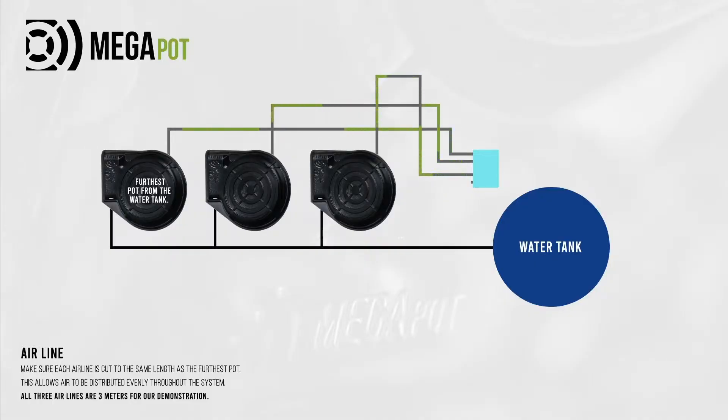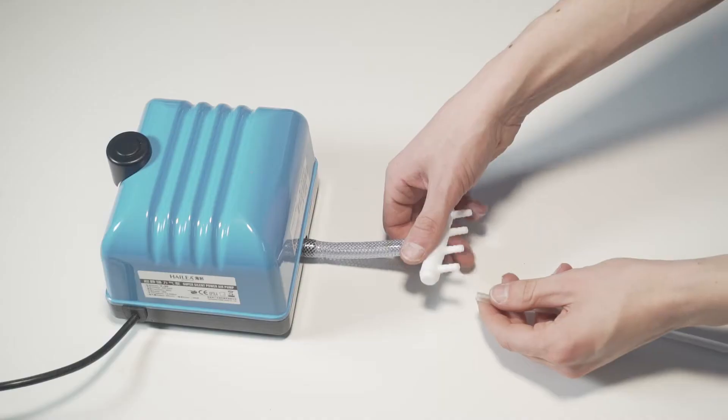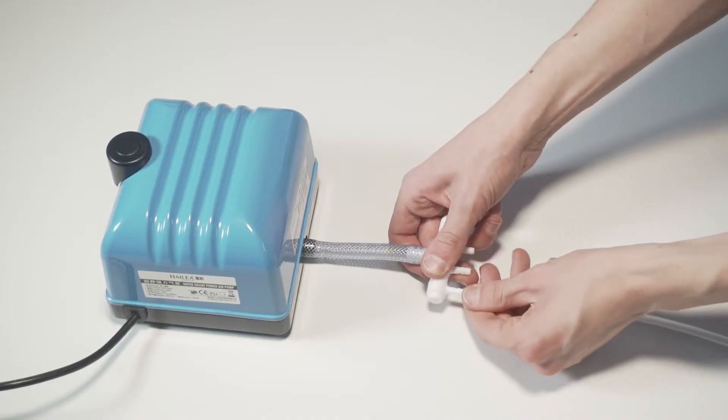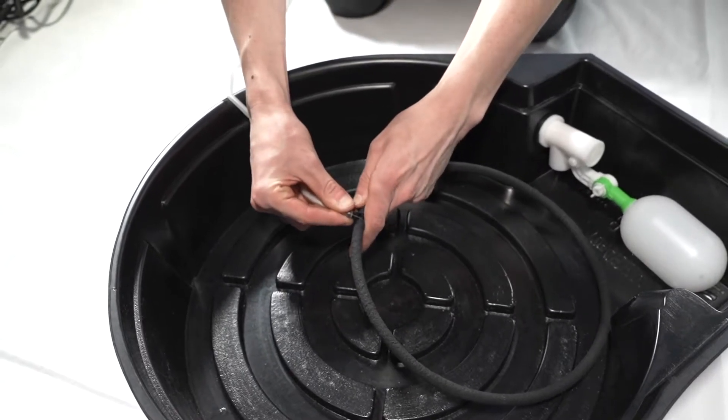Next, measure the air line from the pot furthest away from your air pump and cut it to length. Each air line will need to be cut to the same length to ensure the air is distributed evenly. Connect the air lines to the air pump manifold and then to each T piece. Then, run the air line out of the slots on the raised bed.